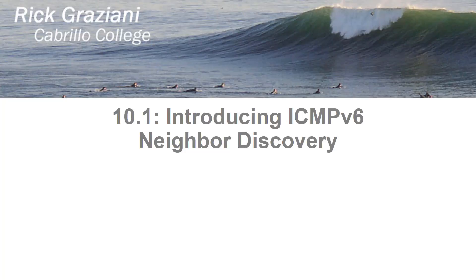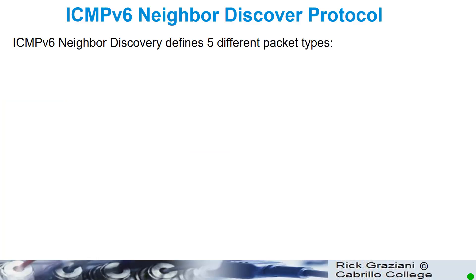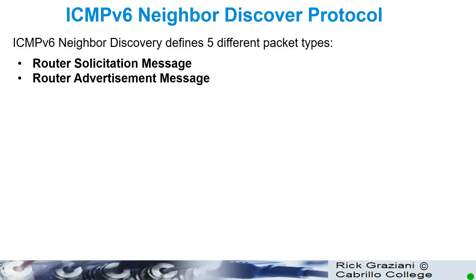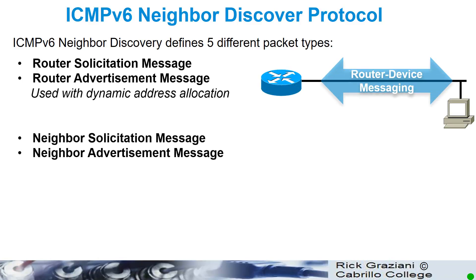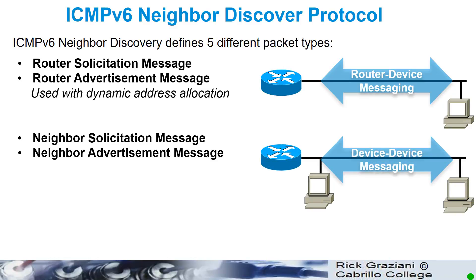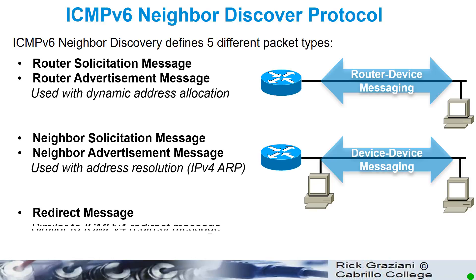Let's talk about the introduction to ICMPv6 Neighbor Discovery. In Chapter 9, we talked about ICMP and a little bit about Neighbor Discovery, but we're going to go more in depth now. The Neighbor Discovery Protocol defines five different packet types: an RS and an RA — that's going to be more for dynamic allocation — an NS (Neighbor Solicitation), an NA (Neighbor Advertisement), which is similar to what you'd expect with IPv4 ARP, and a redirect message, similar to ICMPv4, more of a router-to-device type mapping.